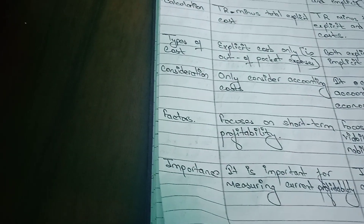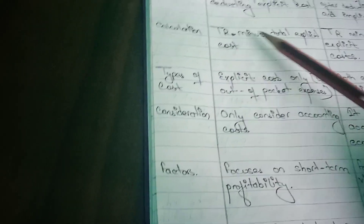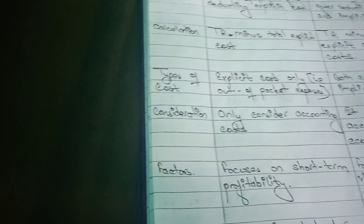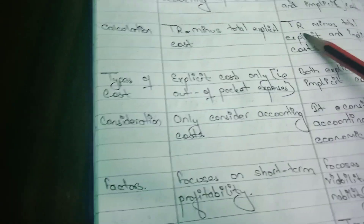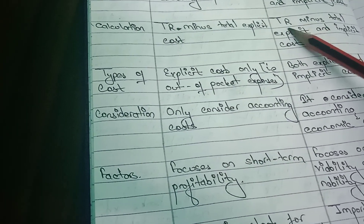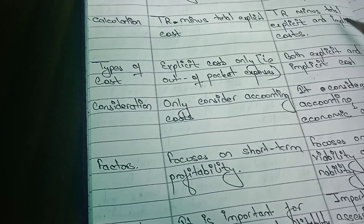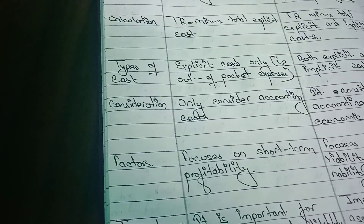Simply, the formula for business profit is: Total Revenue minus Total Explicit Cost. The formula for economic profit is: Total Revenue minus Total Explicit Cost and Implicit Cost.